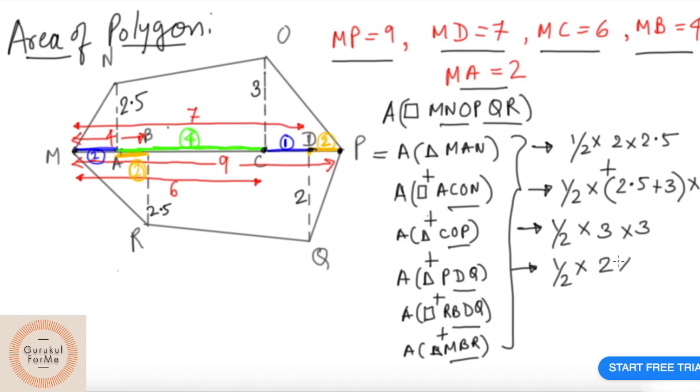What is area of quadrilateral RBDQ? We know that it's got two parallel sides and one slant side. It's a trapezium. How do we calculate area of a trapezium? Half into sum of the parallel sides, which are RB and DQ, 2.5 plus 2. What is the height here? Height is BD, so 3.